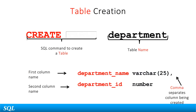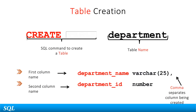Now that we have seen the commands to create, use, and delete a database, let's look at the commands to create tables. Tables are the structures in a database that hold the data. The CREATE TABLE command creates a table. After the table name, you can also specify the names, types, and sizes of the columns that the table will have. In the example here, we create a table with the name 'department' having two columns — the department name and the department ID.